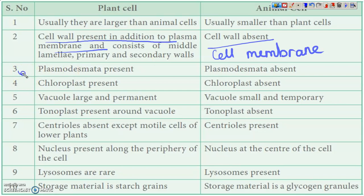Our third point is with respect to plasmodesmata. In plant cells, plasmodesmata are present, while in animal cells they are absent.